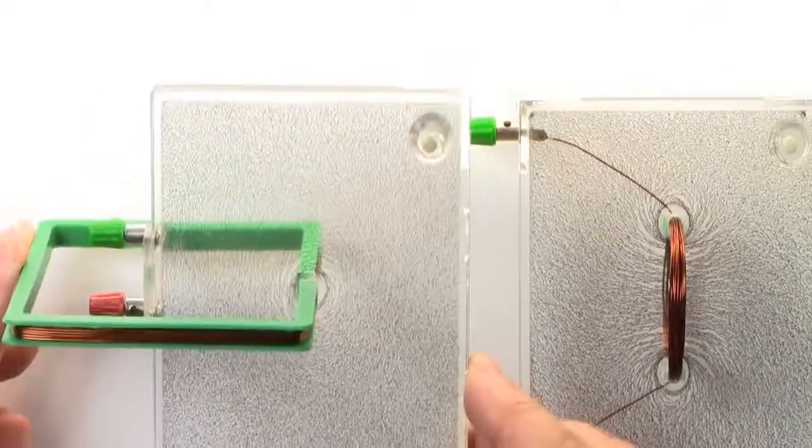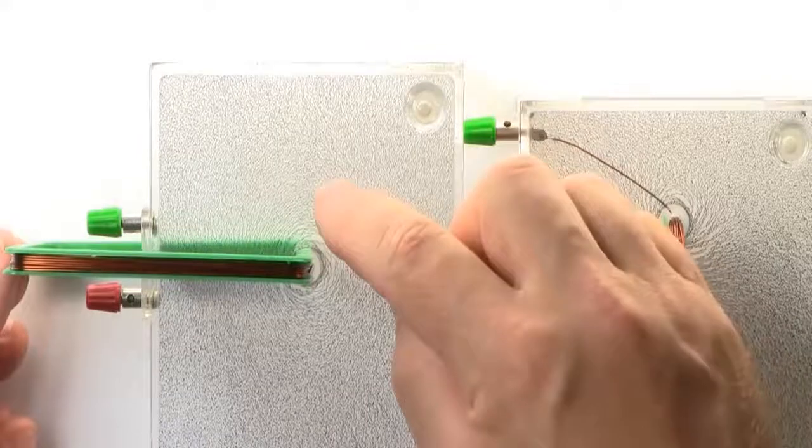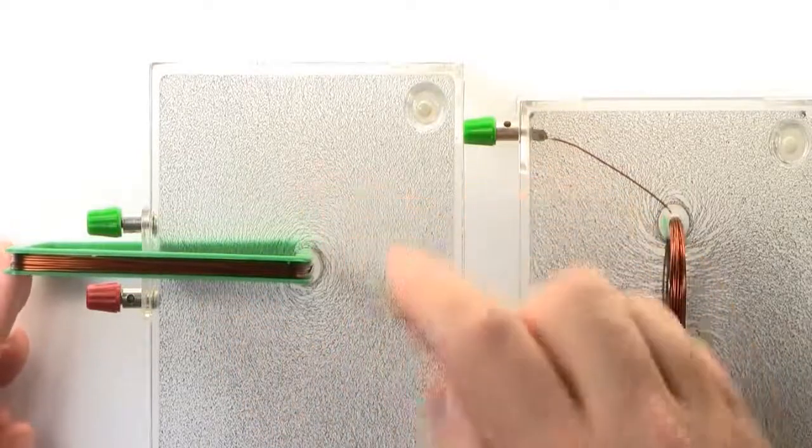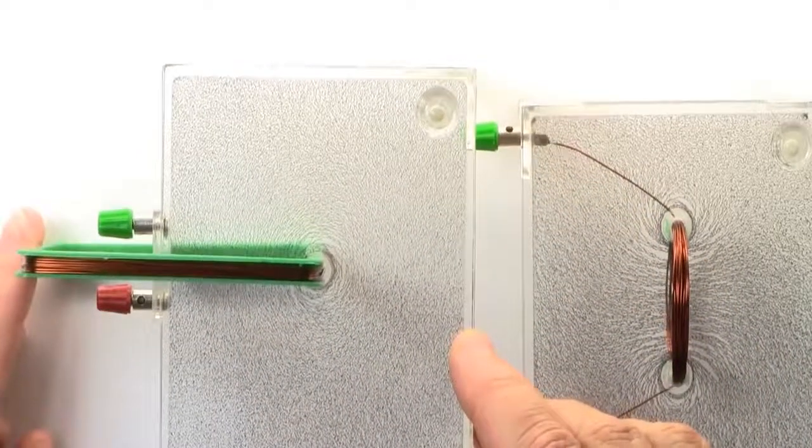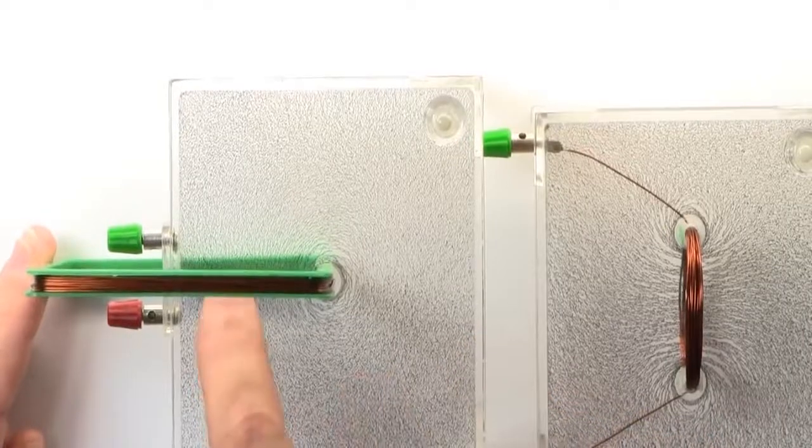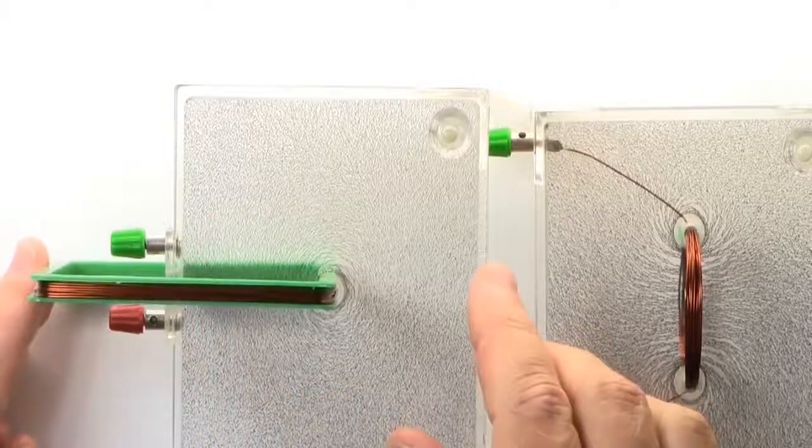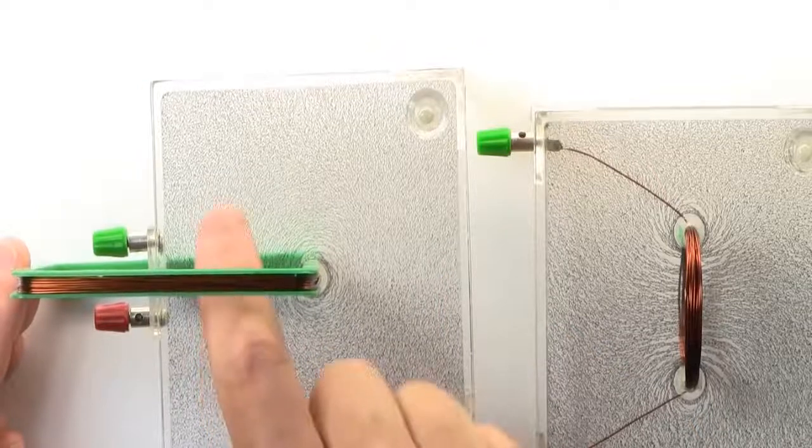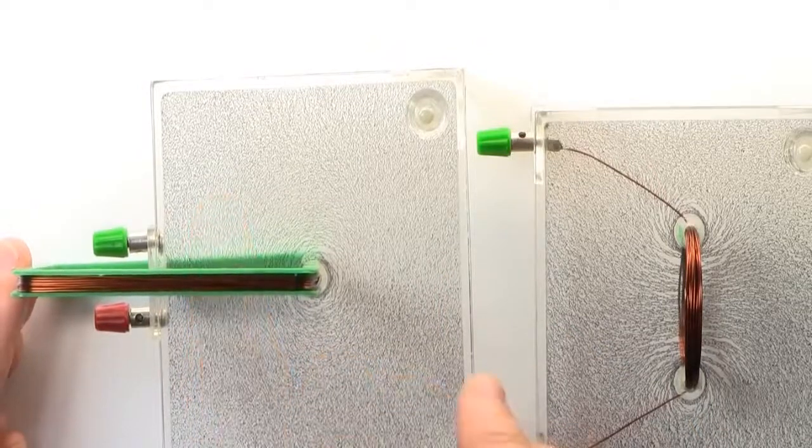And then just have a look at the first one we looked at, which was the big square coil. And we can see that this one's actually forming a large circle around here. And then if we do look carefully on this, we can see that down through the center of the coil, they are actually lining up a little straighter here.